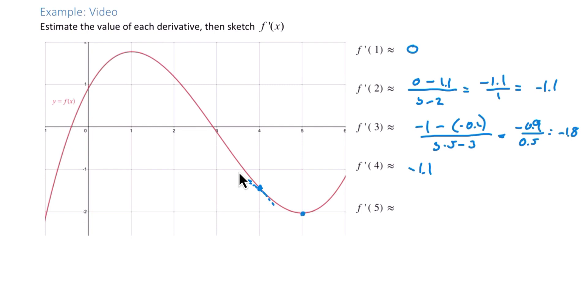And then at 5, we have another horizontal tangent. We can say its tangent line has a slope of 0. So again, these are all estimates. Yours might be slightly different than mine.